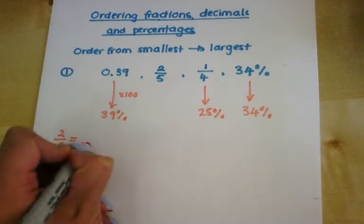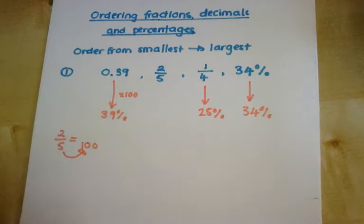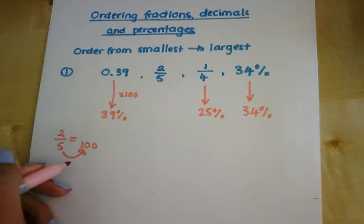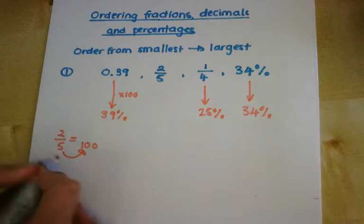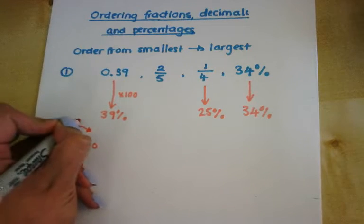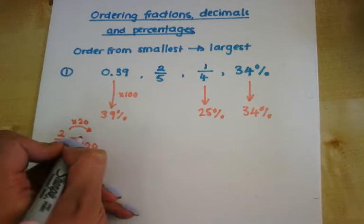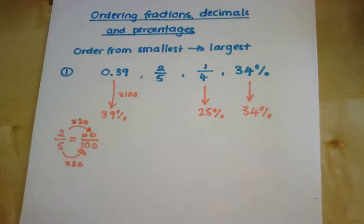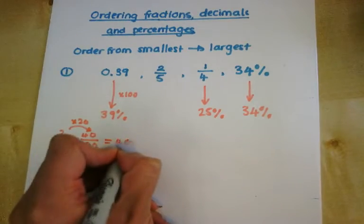So I want to put it into a percentage out of 100. I need to find what number I can multiply 5 by to get to 100, that's 20. I need to do the same to the top. So it's going to be 40 out of 100, which is the same as 40%.